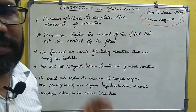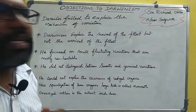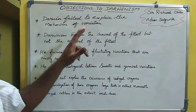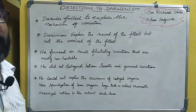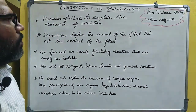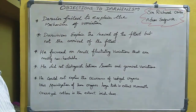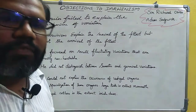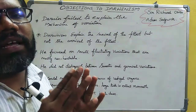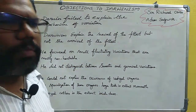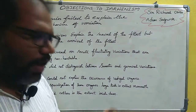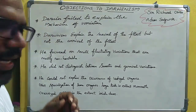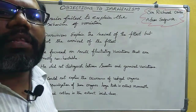Sir Richard Owen and Adam Sedgwick objected to Darwinism. First, Darwin failed to explain the mechanism of variations — the origin and causes of variations. There are two types of variations: favorable variations and unfavorable variations. Variations added to an organism that are helpful are favorable variations.